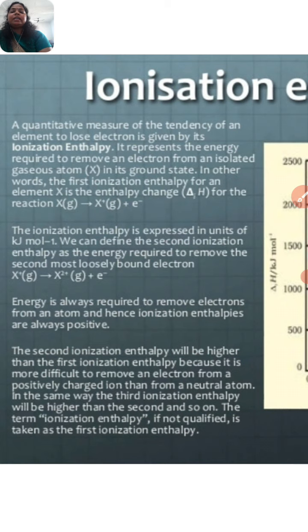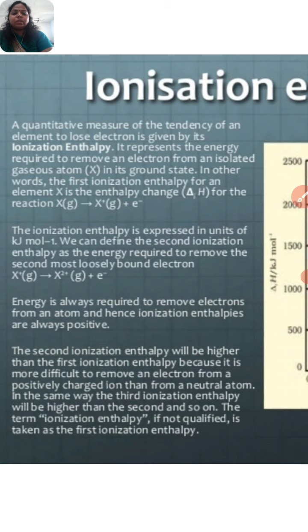That is, if we have an element X in the gaseous state and we need to remove one electron from it, the energy required for that process is called the ionization enthalpy of that element. After this reaction, the element is converted into an X⁺ ion and the electron is released.